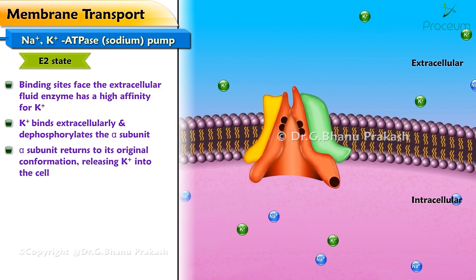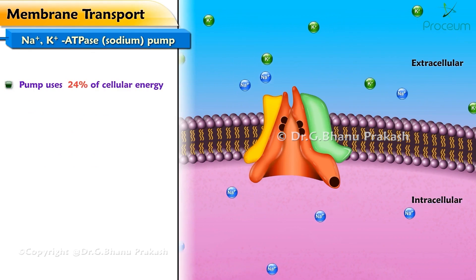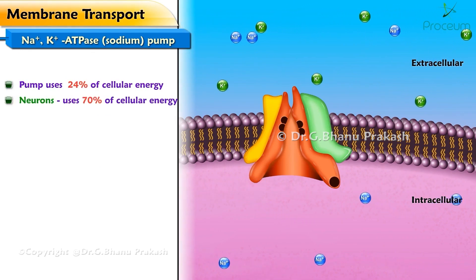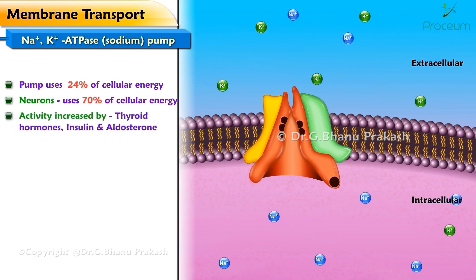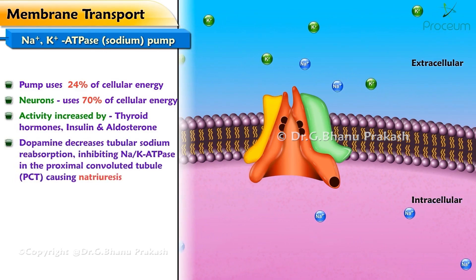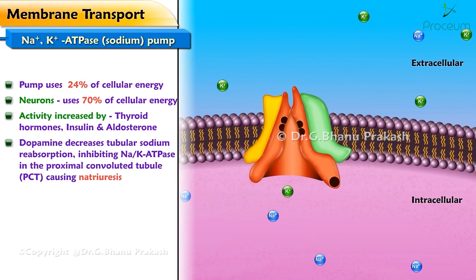K+ ions are then released into the cell. This pump uses about 24% of the energy utilized by cells, and in neurons it uses approximately 70% of cellular energy. The Na+/K+ pump activity is increased by thyroid hormones, insulin, and aldosterone.